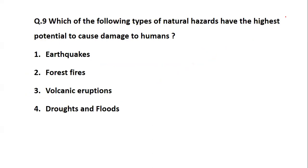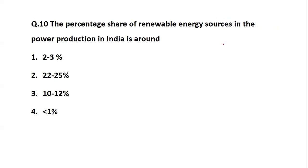Question: which type of natural hazard has the highest potential to cause damage? The question is familiar but always phrased in various ways. The options are earthquakes, forest fires, volcanic eruptions, or droughts and floods. The major type of damage is caused by droughts and floods.